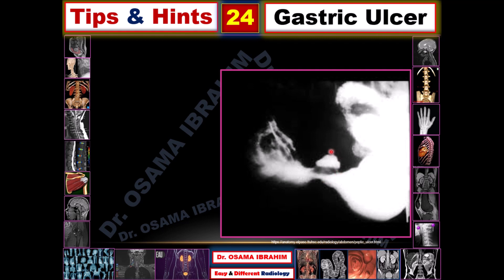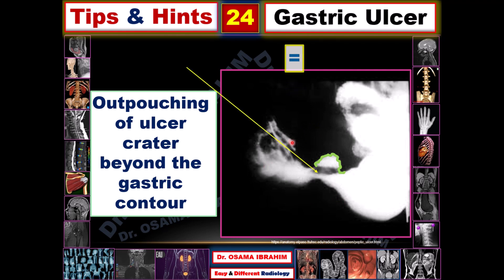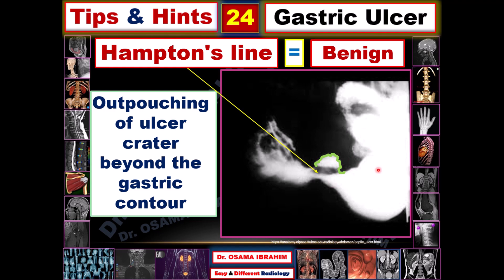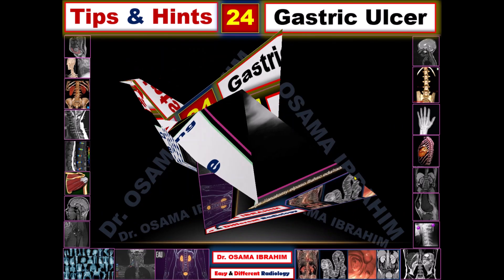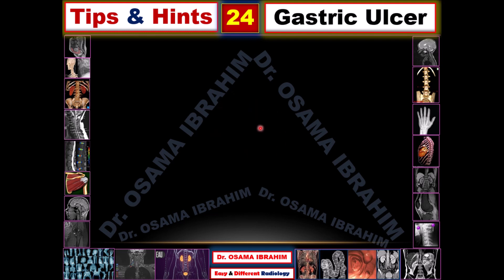To summarize on this image: the ulcer is extraluminal — a feature of benign; the Hampton's line due to edema at the stomach wall is also a feature of benign. All features of benign gastric ulcer are appearing in this image, helping to diagnose the benign form and differentiate it from malignant gastric ulcer.